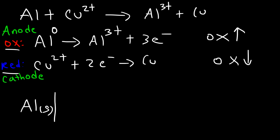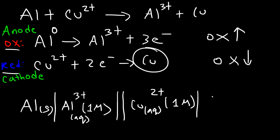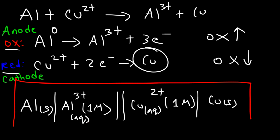So we can write the line notation for this example. The anode is aluminum, and in the solution we have the Al³⁺ cation — since no concentration is given, we use the standard concentration of 1 M. Then a double vertical line separates the two half cells. On the right side, Cu²⁺ is in aqueous phase at 1 M, and the cathode is copper metal.